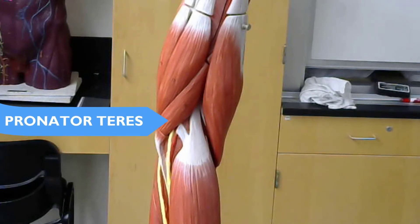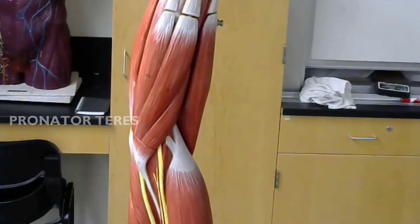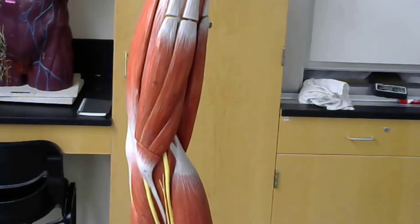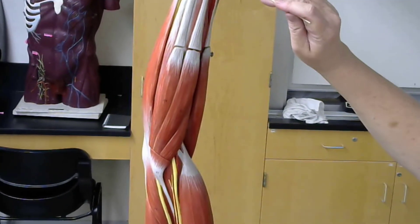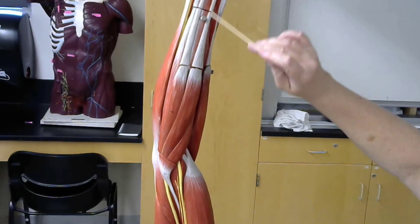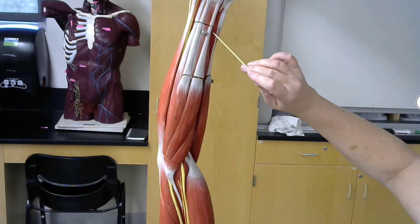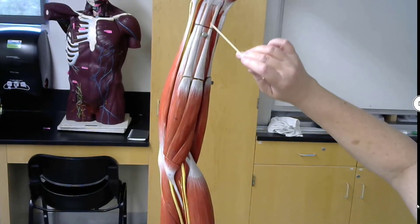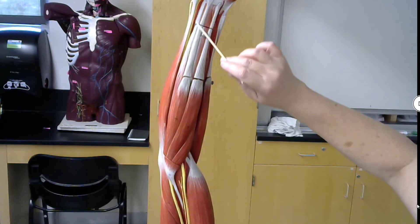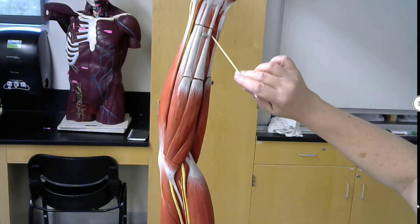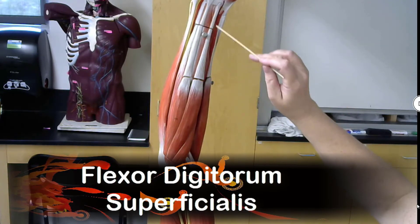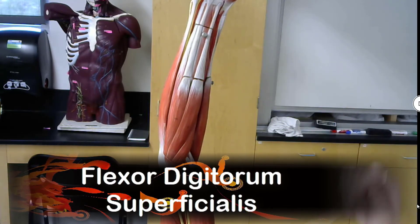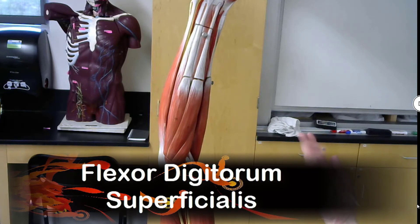Pronator teres. Now, as I turn this around a little bit more, I do have a muscle here as well that is underneath this area, just this pink area here. This is known as the flexor digitorum superficialis. This lets us wiggle our fingers.